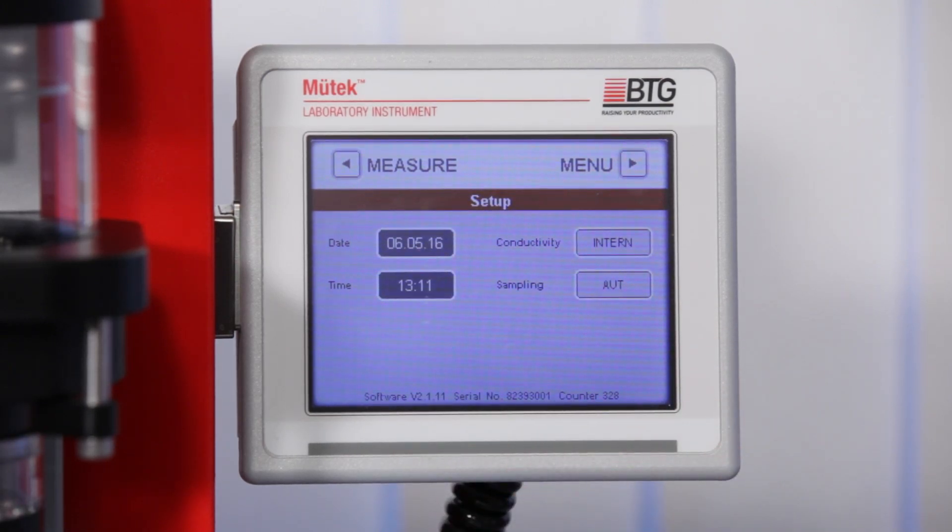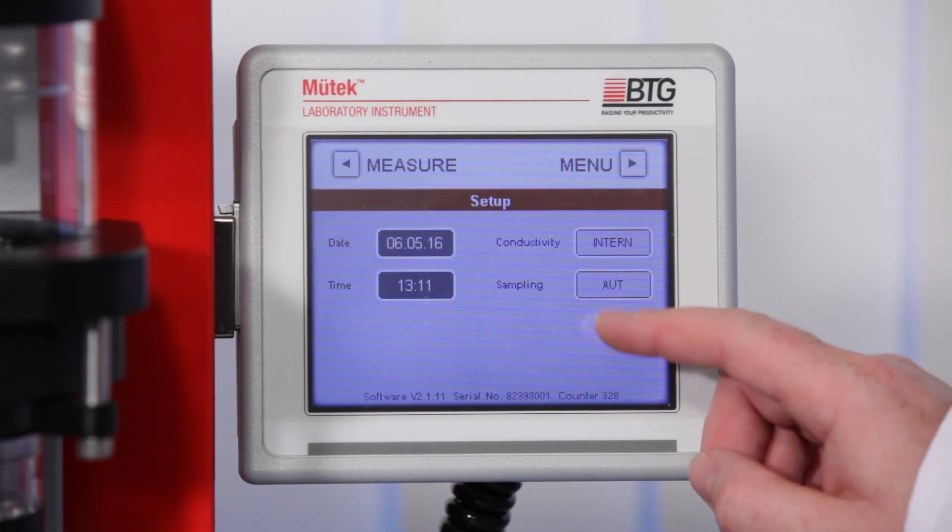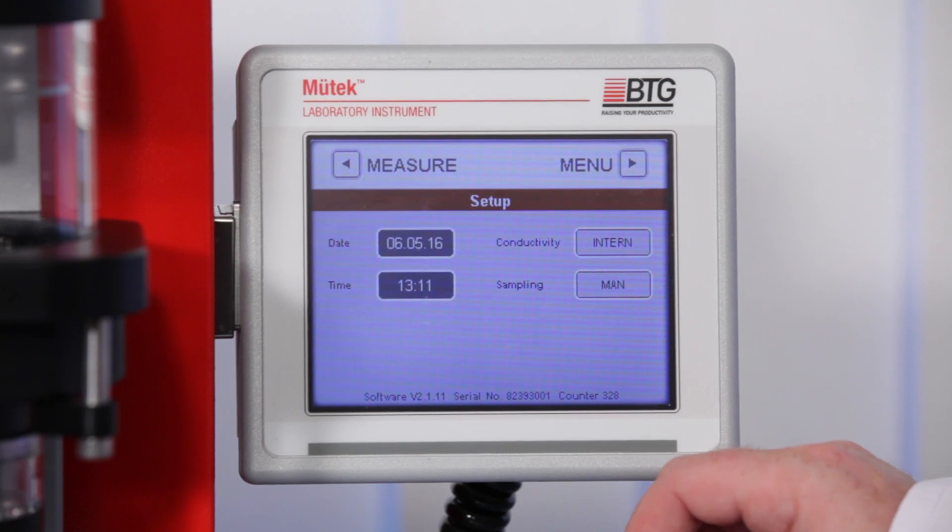In automatic mode, the SZP runs an automated sampling procedure according to the chosen sampling parameters. In manual mode, you can control sampling via the display.